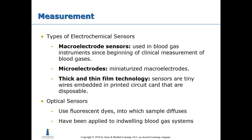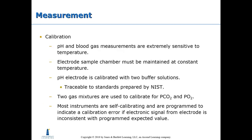Types of electrochemical sensors: macro electrode sensors have been used in blood gas instruments since the beginning of clinical blood gas measurement. Micro electrodes are miniaturized macro electrodes. Thick and thin film technology uses sensors — tiny wires embedded in a printed circuit card — that are disposable. Optical sensors use fluorescent dyes into which the sample diffuses and have been applied to in-dwelling blood gas systems. Calibration of pH and blood gas measurements is extremely sensitive to temperature, so the electrode sample chamber must be maintained at constant temperature. The pH electrode is calibrated with two buffer solutions traceable to NIST standards; two gas mixtures are used to calibrate for pCO2 and pO2. Most instruments are self-calibrating and programmed to indicate a calibration error if the signal from the electrode is inconsistent with the programmed expected value.